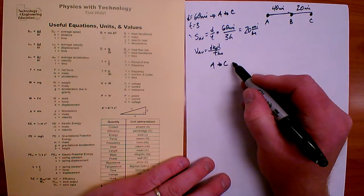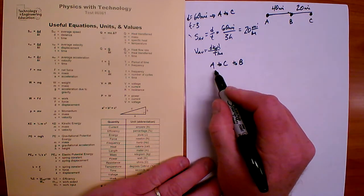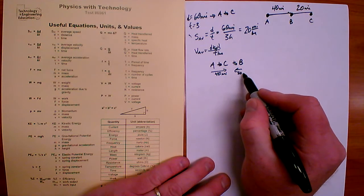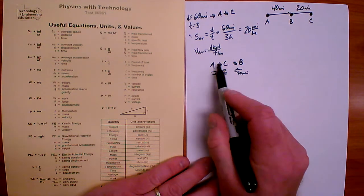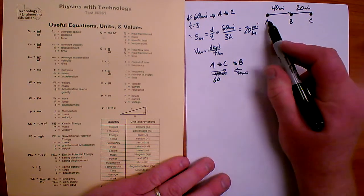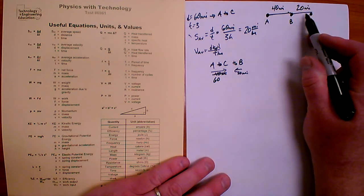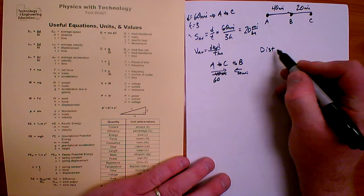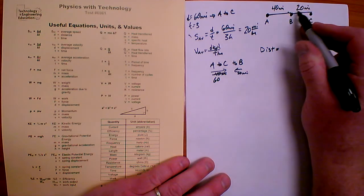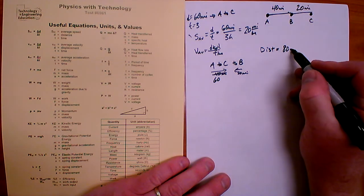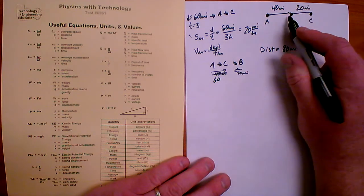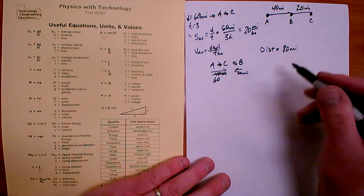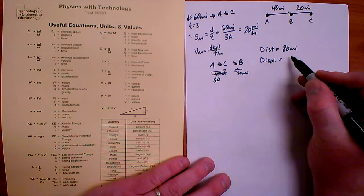Now suppose the car went from A to C and then back to B. A to C is 60 miles, then we go back 20 miles to B. The total distance traveled is 60 plus 20, which is 80 miles. But displacement is how far you are from where you started — at point B, that's 40 miles from A, so the displacement is 40 miles.